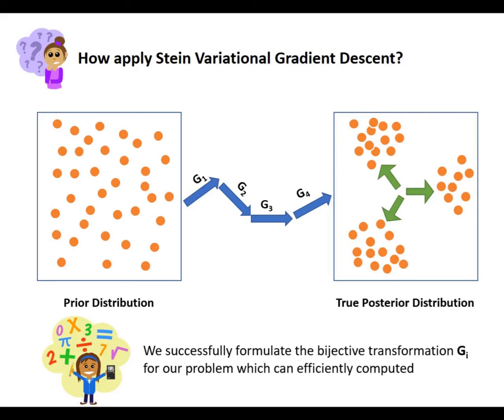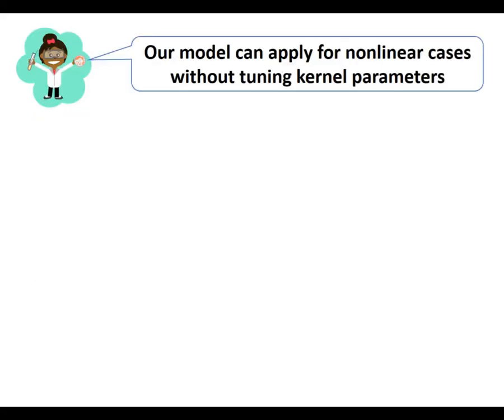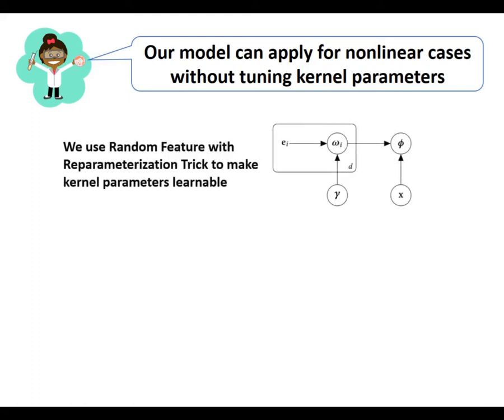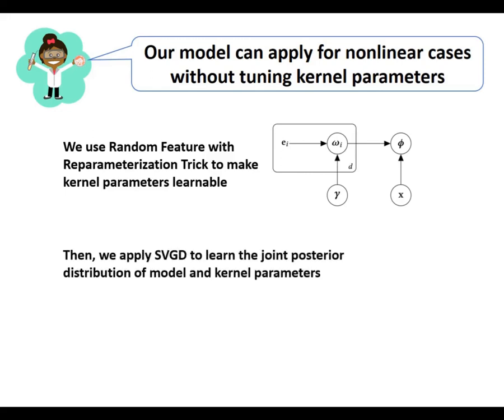We can further learn the kernel parameters to avoid expensive parameter tuning procedures. Here, we use Fourier random features together with a reparameterization trick to make the kernel parameters learnable. Then, we again apply SVGD to learn the joint posterior distribution of model and kernel parameters.